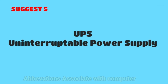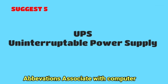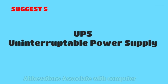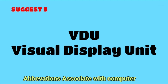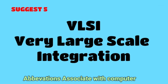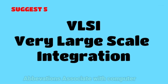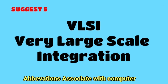The full form of UPS is Uninterruptible Power Supply. The full form of VDU is Visual Display Unit. The full form of VLSI is Very Large Scale Integration.